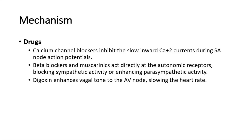Calcium channel blockers inhibit the slow inward calcium ion currents during SA node action potentials. Beta blockers and muscarinics act directly at the autonomic receptors, blocking sympathetic activity or enhancing parasympathetic activity. And digoxin enhances vagal tone to the AV node, slowing the heart rate.